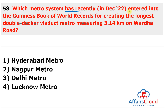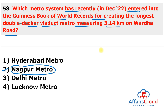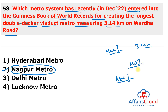Question 58: Which metro system entered the Guinness Book of World Records for creating the longest double-decker viaduct metro? The answer is Nagpur Metro. Nagpur Metro in Maharashtra entered the Guinness Book of World Records for creating the longest double-decker viaduct metro measuring 3.14 km on the Vardha Road. Maha Metro MD Brijesh Dixit received the Guinness World Record certificate at the Metro Bhavan. The structure had already been certified as the longest in Asia and India by the Asia Book of Records and India Book of Records respectively.